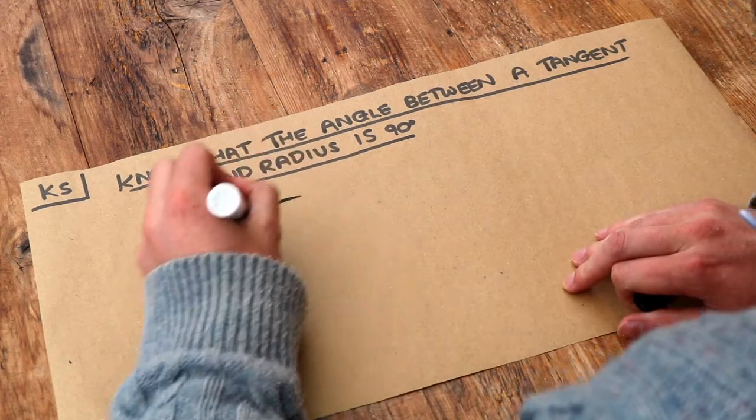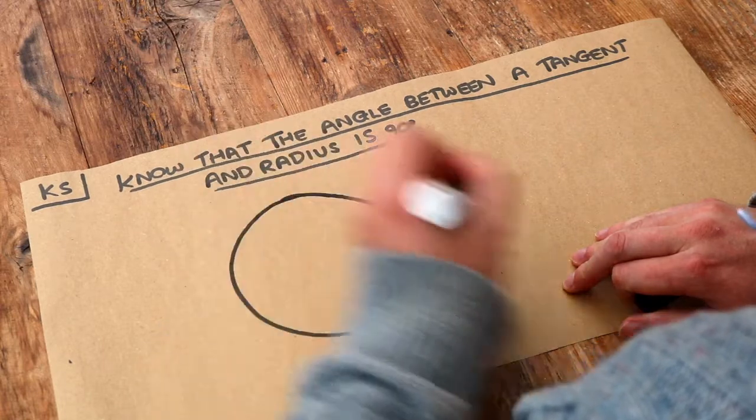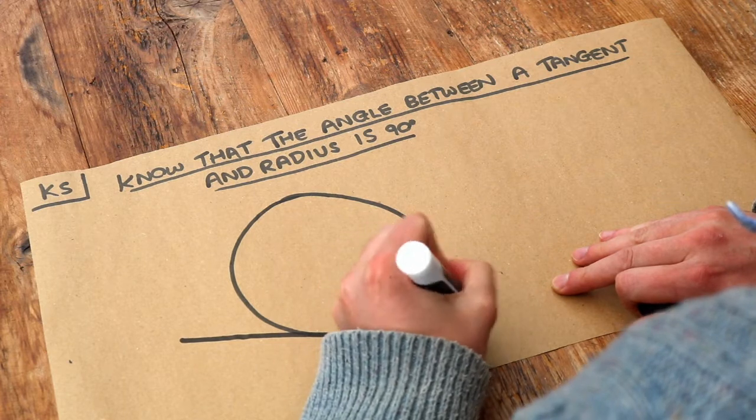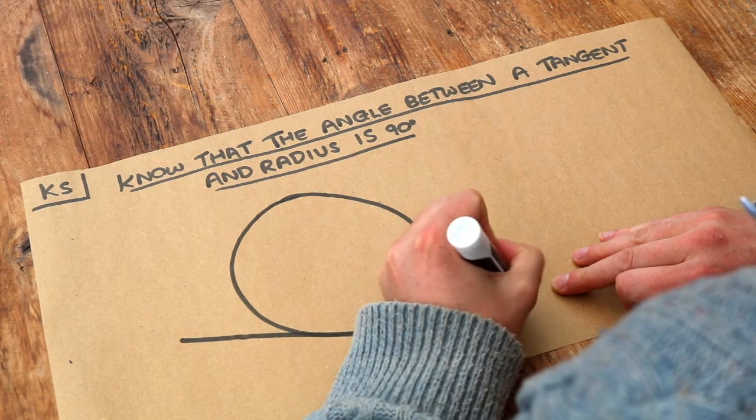So if I draw a circle, let's remind us what a radius is and a tangent is. A tangent is just a line that touches the circle, a straight line that touches the circle.